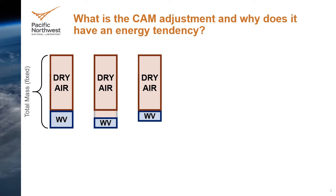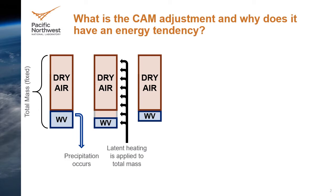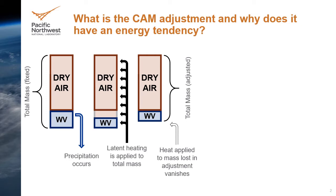An example: if condensation results in rain falling out from the column, there would be a spurious increase in dry air mass to balance the water vapor mass lost to rain. But here's where it starts to become problematic. The latent heat release from the condensation is applied to the total mass, including the rain mass that has just exited the column. At the end of the physics parameterizations when the adjustment is performed to correct the total mass, the energy that went into heating the spurious dry air mass is simply thrown out. Nominally, one might think of this as the rain carrying energy away, but instead of giving that energy to the land or ocean, the model ignores it.